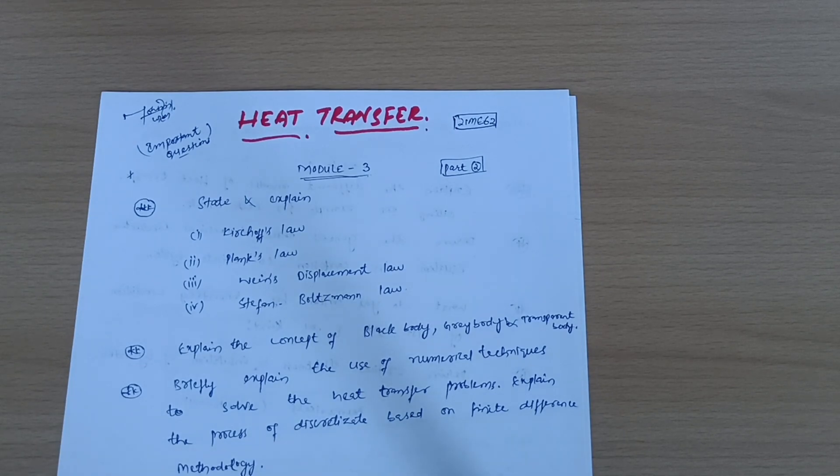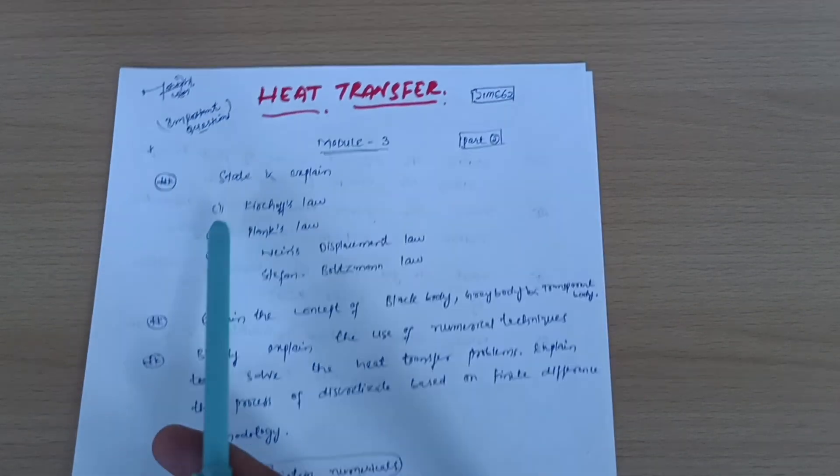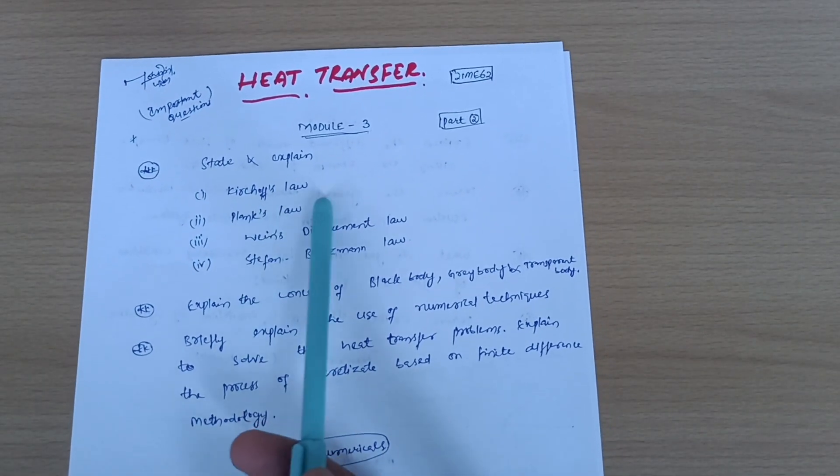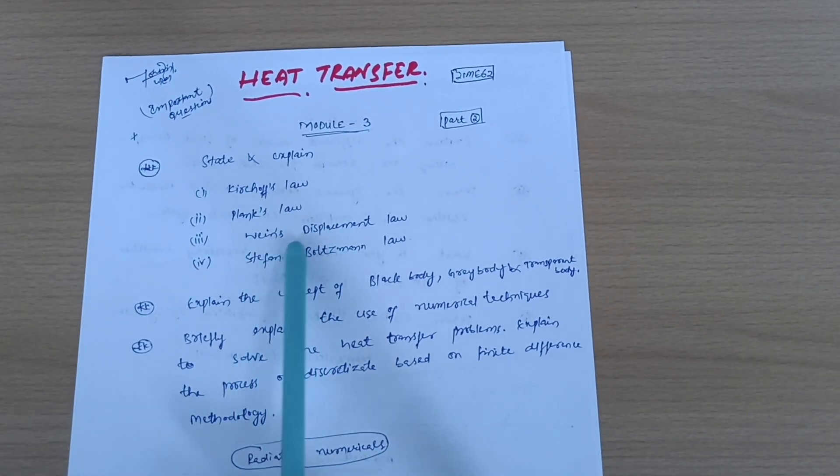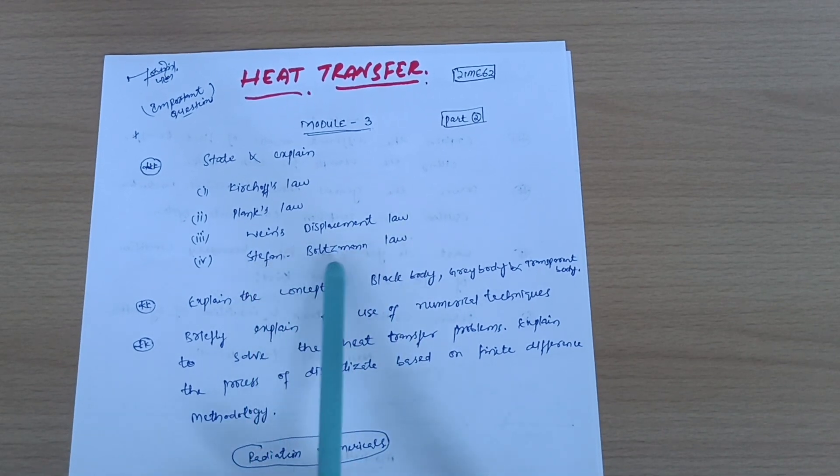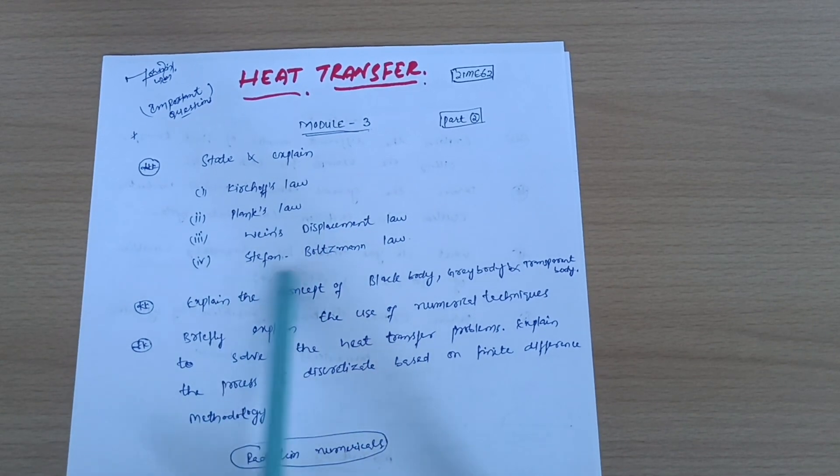It is a tricky subject with a lot of numerical parts, so stay connected. I will discuss the important questions within three minutes. Let us start with Module 3. Explain Kirchhoff's law, Planck's law, Wien's displacement law, and Stefan Boltzmann law. These four laws may be a 10 marks question in the VTU examination.